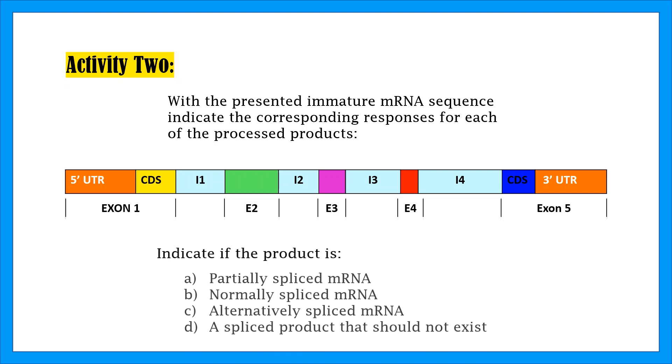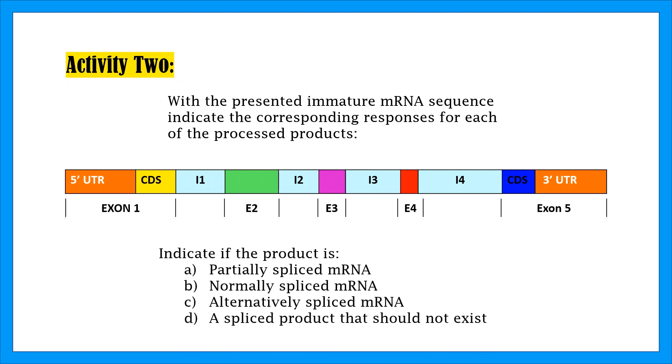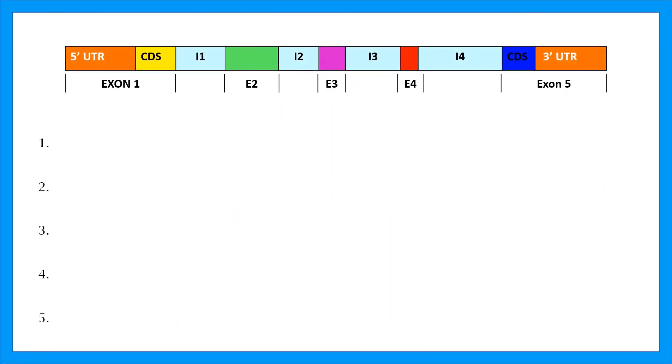For this activity, we need to identify if the sequences are A, partially spliced, B, normally spliced, C, alternatively spliced, or D, a spliced product that shouldn't exist. Now, when an mRNA sequence is being spliced, the introns, shown as light blue segments, must be removed.